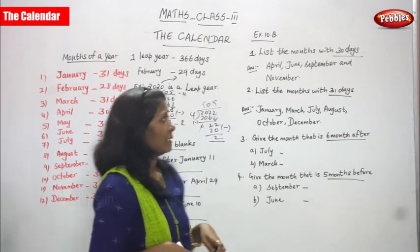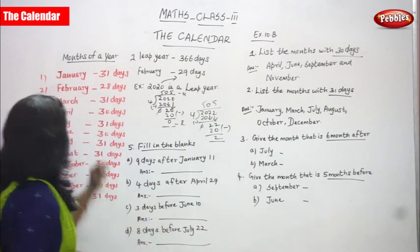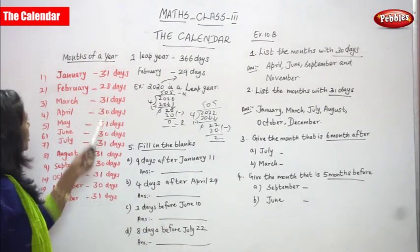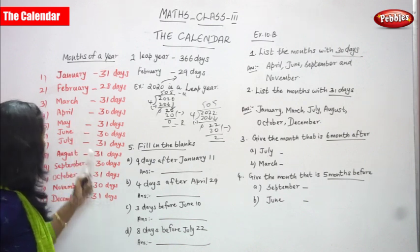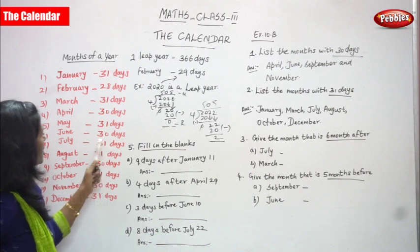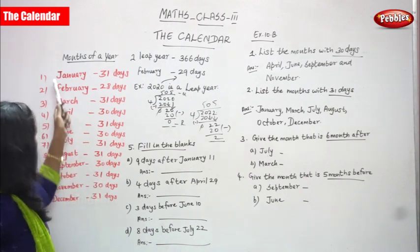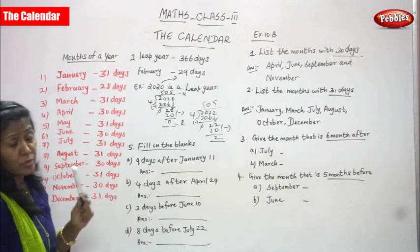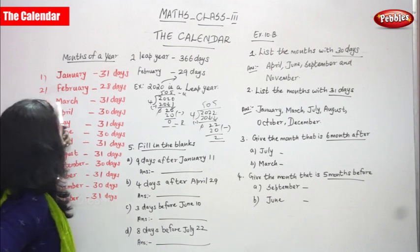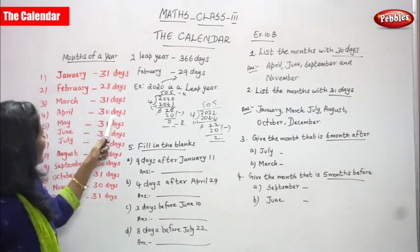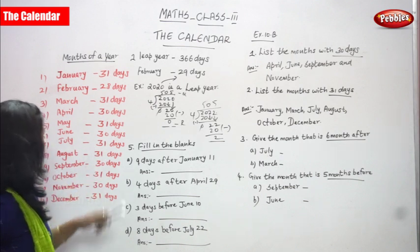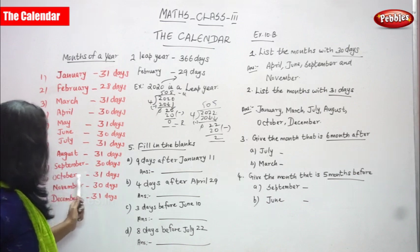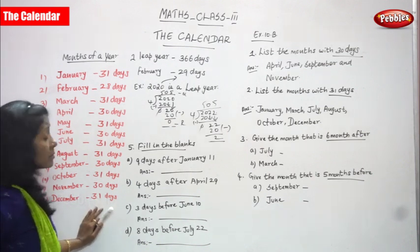Now let's move on to the sums. January has 31 days. February has 28 days generally, but 29 days in a leap year. March has 31 days, April has 30 days, May has 31 days, June has 30 days, July has 31 days, August has 31 days, September has 30 days, October has 31 days, November has 30 days, and December has 31 days.